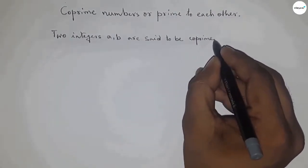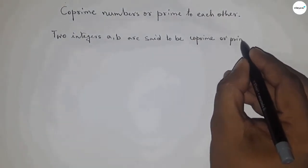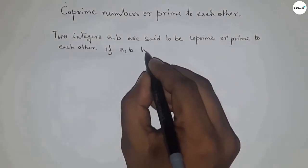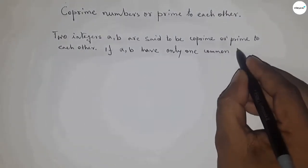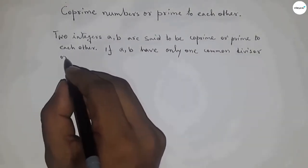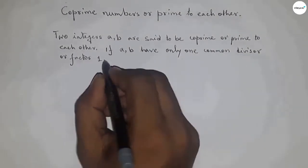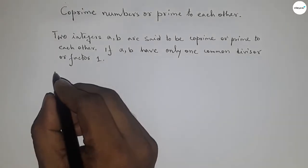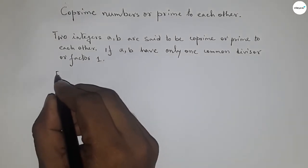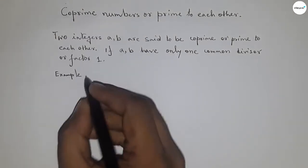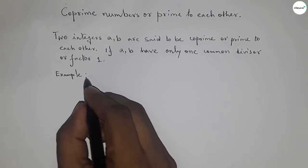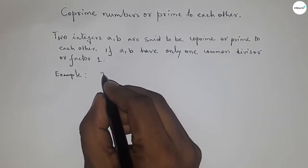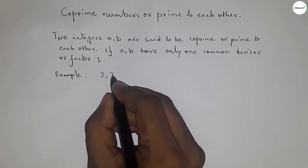Now discussing co-prime: two integers a and b are said to be co-prime or prime to each other if a and b have only one common factor, which is 1. Let us take some examples to explain this.